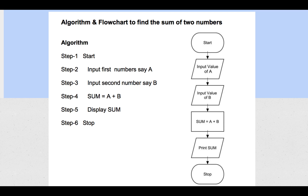First, we'll write an algorithm and flowchart to find the sum of two numbers. An algorithm is a set of instructions. The steps are: Start, input the first number A, input the second number B, compute sum equals A plus B, display sum, and stop.